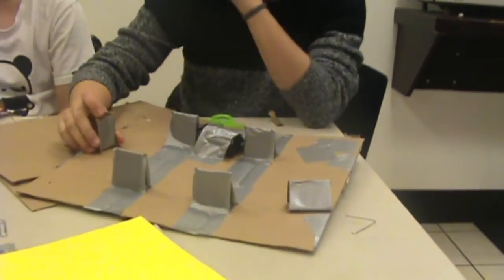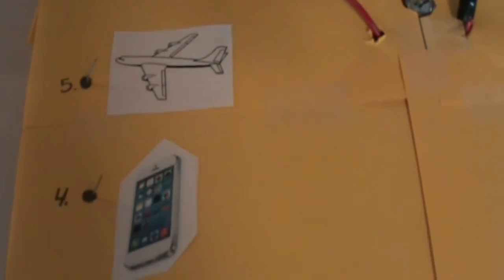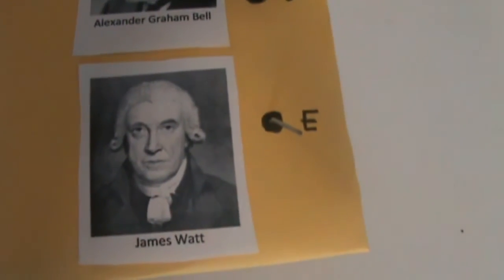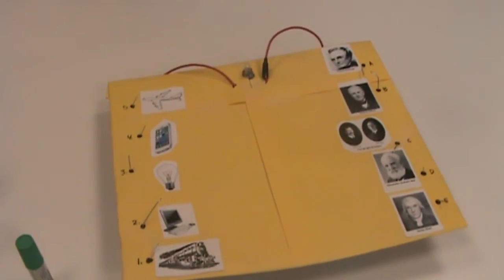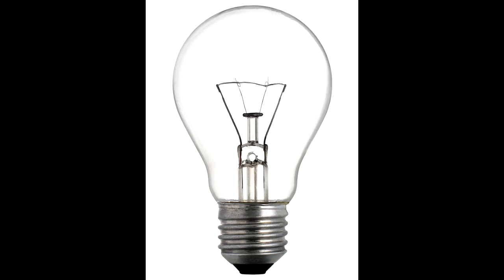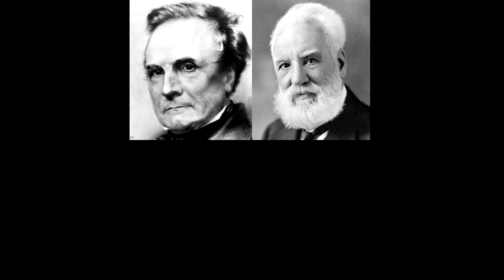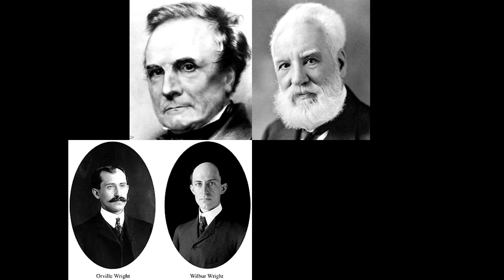So here are the quiz choices. Do you know who invented the airplane, the phone, the light bulb, the computer, and the steam engine? Your choices are Charles Babbage, Thomas Edison, the Wright Brothers, Alexander Graham Bell, and James Watt. We already told you that the light bulb was invented by Thomas Edison, but who invented the steam engine? Was it Charles Babbage, Alexander Graham Bell, the Wright Brothers, or James Watt?